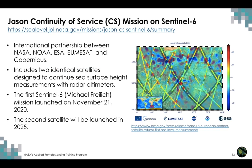This brings us to the Jason Continuity of Service mission — Sentinel-6, also called the Michael Freilich satellite, named after a NASA scientist. It is an international partnership between NASA, NOAA, ESA, EUMETSAT, and Copernicus. The system will include two identical satellites designed to continue sea surface height measurements with radar altimeters. The first, Sentinel-6, was launched in November 2020, and the second will be launched in the 2025 timeframe.